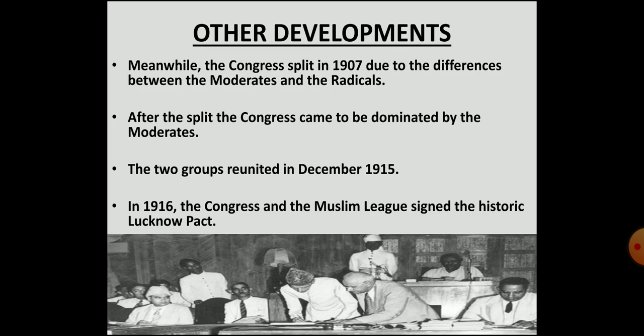Meanwhile, because of many differences in opinion between the moderates and radicals, the Congress split in 1907. The moderates accepted the Swadeshi movement but refused to boycott British goods, feeling that it would involve the use of force and embitter relations between British and Indians. The Congress was now controlled and dominated by the moderates, and Tilak's followers — the radicals — functioned from outside. In December 1915, the two groups of Congress united again. In 1916, Congress and the Muslim League signed the Congress-League Pact, popularly called the Lucknow Pact. By signing this pact, both political organizations decided that they would work together for representative government in the country.